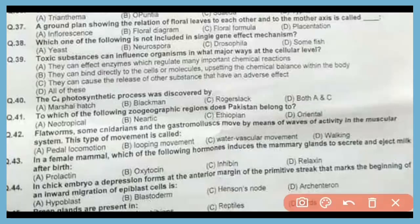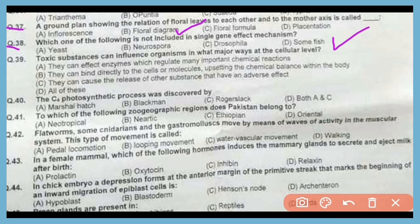Question number 37. A diagram showing the relation of floral leaves to each other and to the mother axis is called a floral diagram. The correct answer is option B. Question number 38. Which one of the following is not included in the single gene effect mechanism? The correct answer is option D. Some fishes have no single gene effect mechanism.